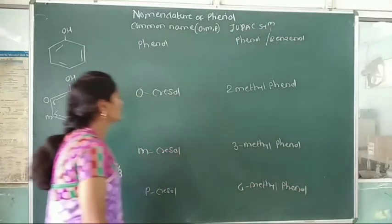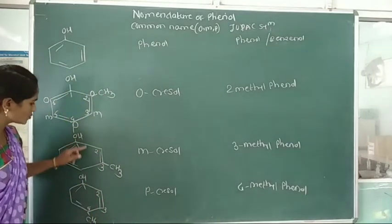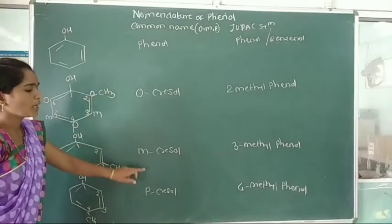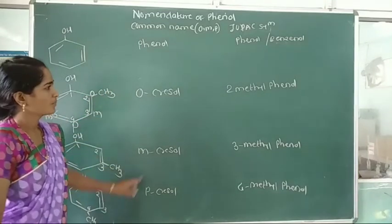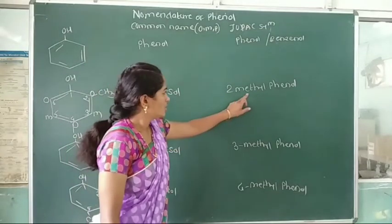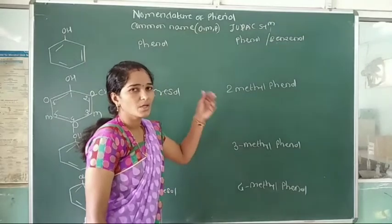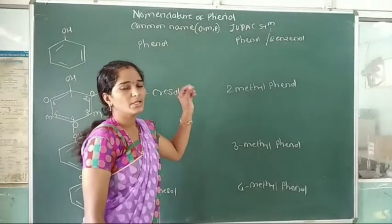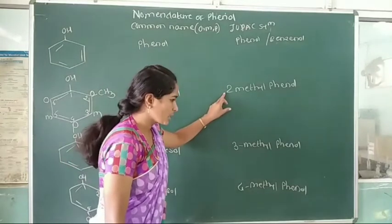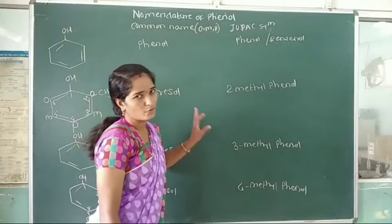In the case of substituted phenol: the common system uses ortho, meta, para prefixes, while the IUPAC system uses locants — the substituent is attached to which carbon atom is indicated by the number 2, 3, or 4.